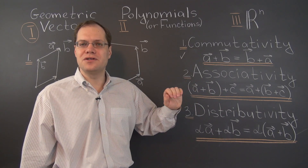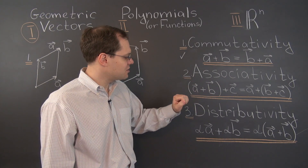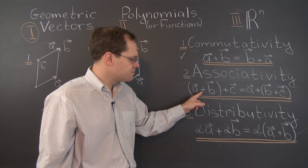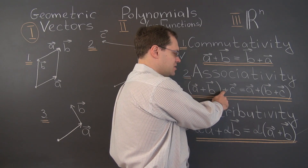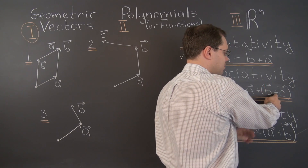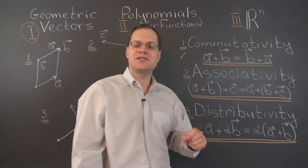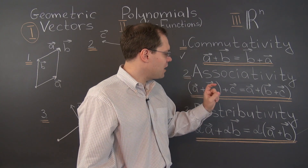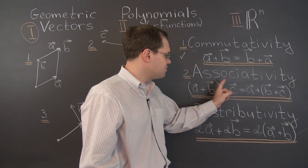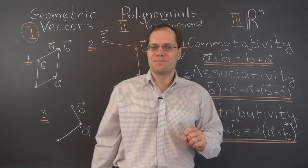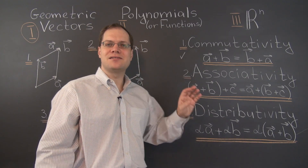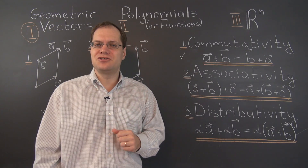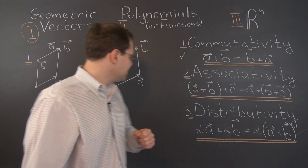Associativity tells us that the order of the operations doesn't matter — you can do this plus first, then take the aggregate and do the next plus, or alternatively do the second plus first and then the first plus. It's sort of like commutativity, but for the order of operations. And once again, this looks perfectly innocent when dealing with ordinary numbers, but interpreting it geometrically for vectors will get interesting.